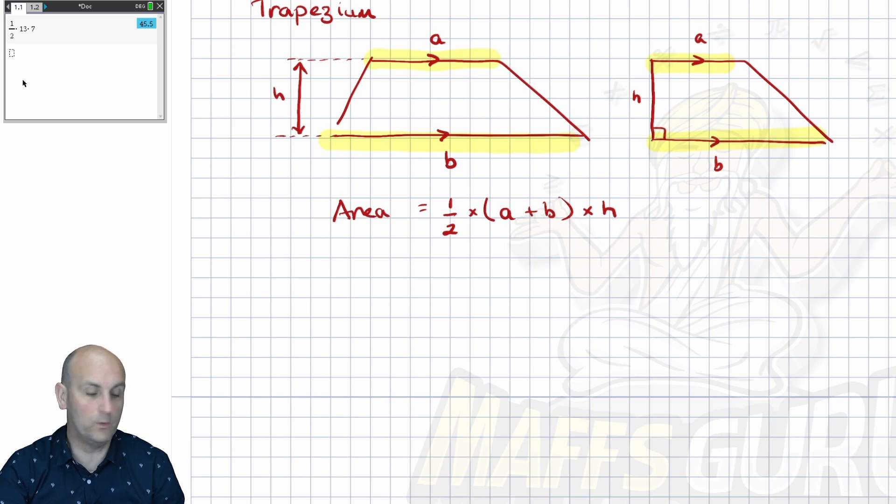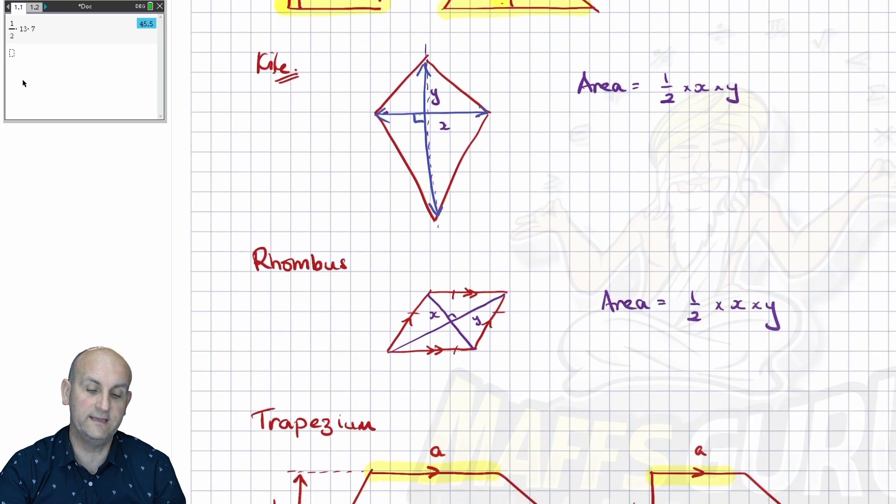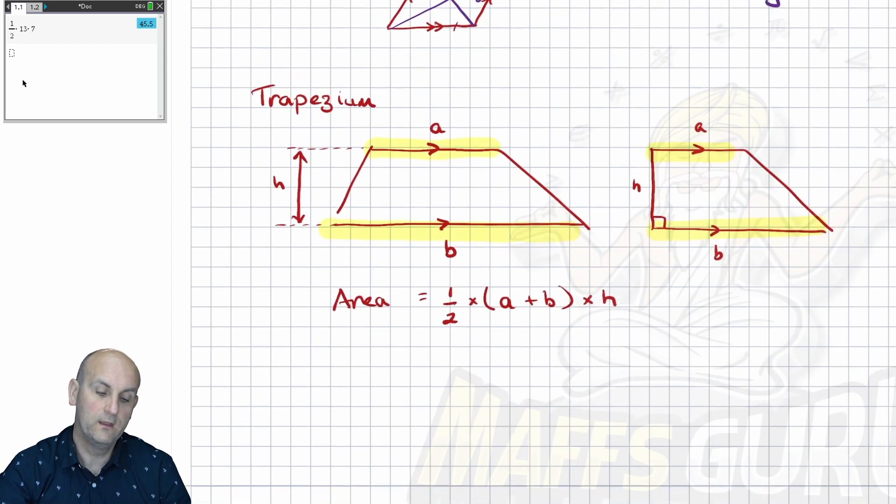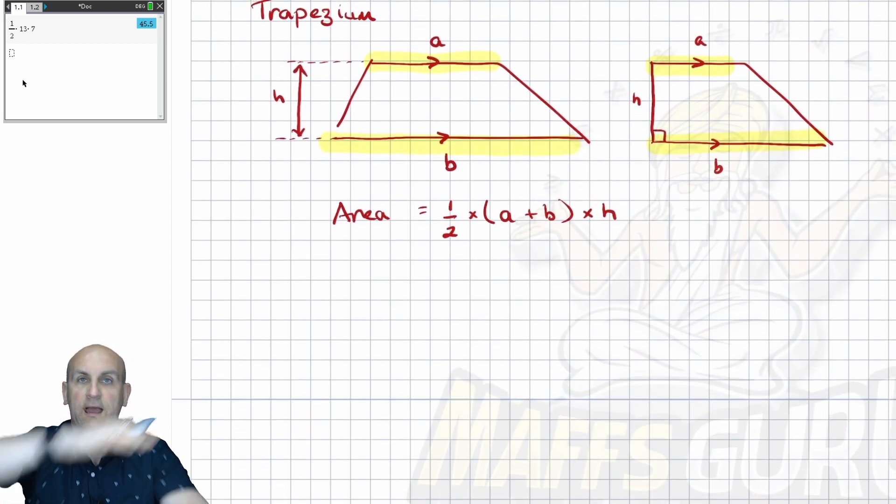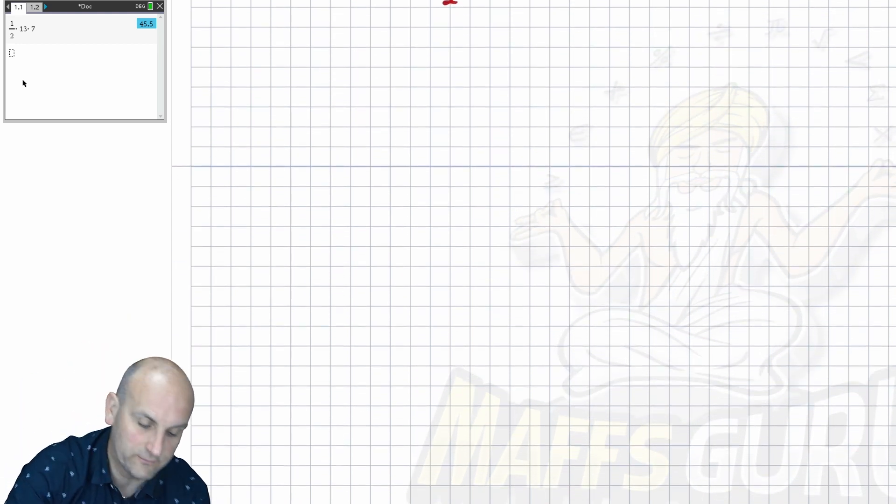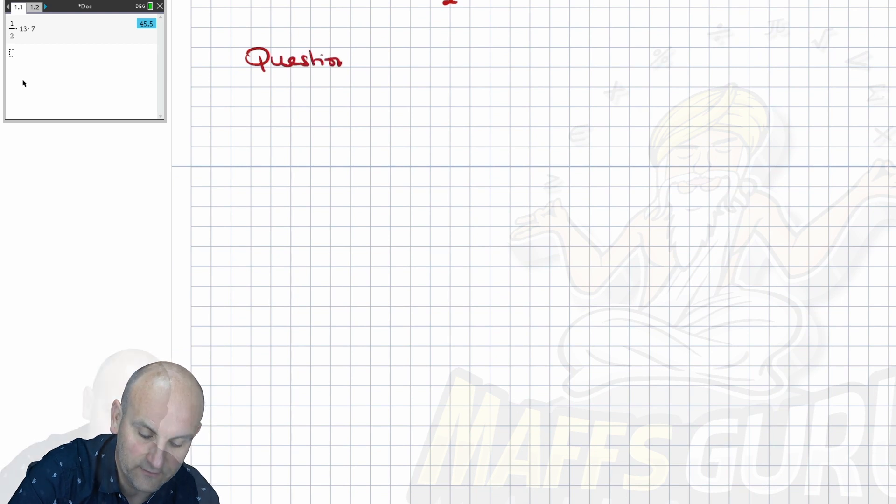So looking back at what we've done here, what have we got? We've got the area of a kite and a rhombus exactly the same. Find the diagonals, multiply them, and halve them. Likewise with the trapezium, add times and half. Awesome. So that's the theory, believe it or not, behind this. So let's have a look at some questions in how they can actually use this stuff.